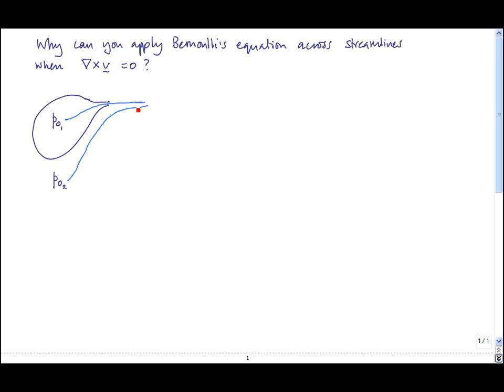What I'm going to do now is consider this part of the flow here. I'm going to blow this up and consider these two parallel streamlines. Now, if they're parallel, it means that there's no acceleration, and therefore no pressure gradient across the streamline.